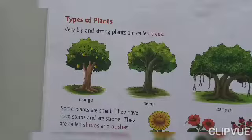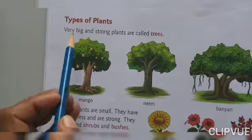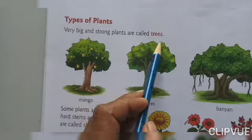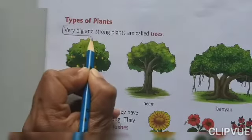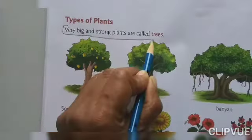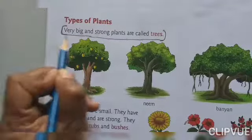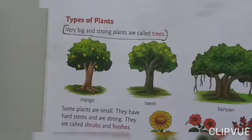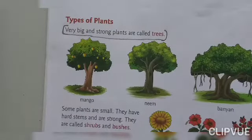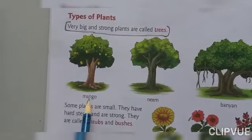Now, next — page 80. Types of plants. Very big and strong plants are called trees. You all need to underline this in your textbook. Mango, neem, and banyan — these are examples of trees.